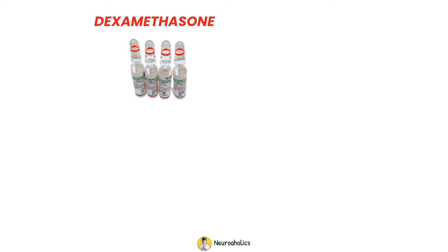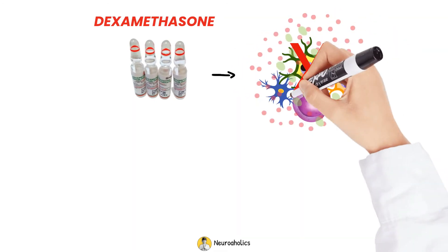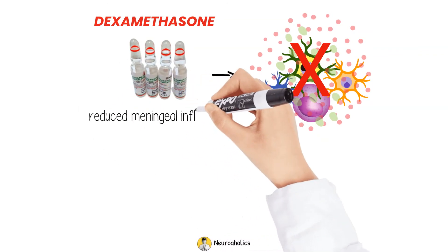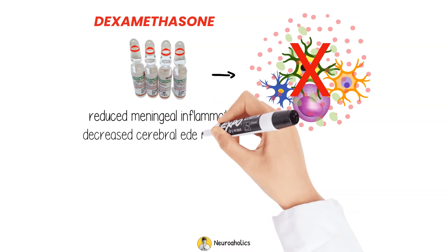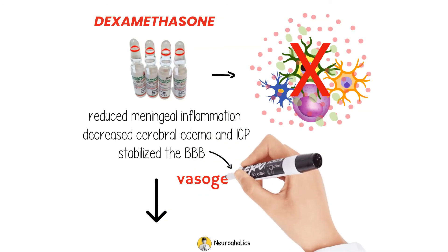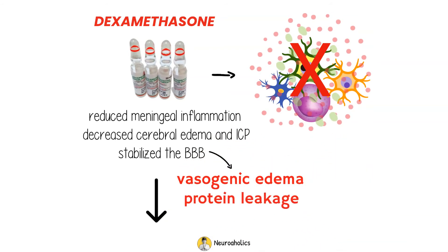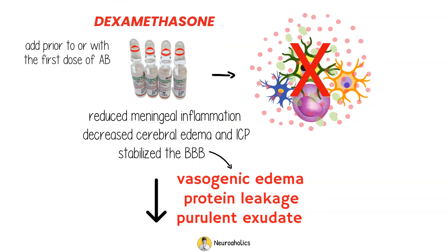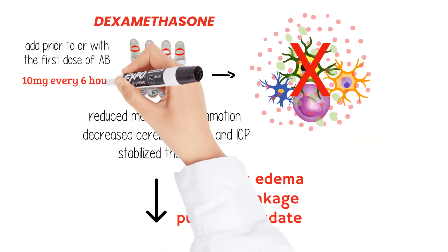The interest in dexamethasone therapy has grown to prevent inflammatory cytokines from being released. Dexamethasone inhibits the synthesis of inflammatory cytokines, reduces meningeal inflammation, decreases cerebral edema and intracranial pressure, and stabilizes the blood-brain barrier, thereby decreasing vasogenic edema, the leakage of serum proteins, and the formation of purulent exudate in the subarachnoid space. Therefore, dexamethasone should be started prior to or with the first dose of antibiotic therapy. The recommended dose of dexamethasone is 10 mg every 6 hours for 2 to 4 days.